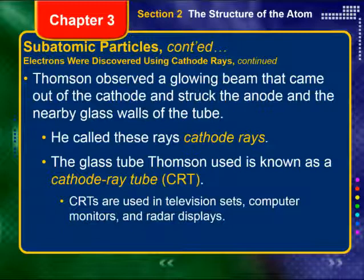Electrons were discovered using cathode ray tubes. Thomson observed a glowing beam that came out of the cathode and struck the anode and the nearby glass walls of the tube. Because this happened in a cathode tube, he called these cathode rays, since they came out of the cathode end. The glass tube Thomson used is known as a cathode ray tube — you've probably used one before if you've used an old-timey TV, called a CRT TV. That's what CRT stands for: cathode ray tube.